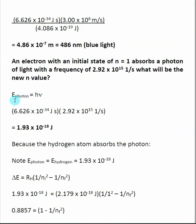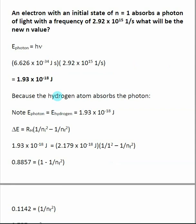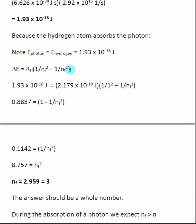First, find the energy of the photon. Since we're given a frequency, we use E = hν, where h is Planck's constant. This gives an energy of 1.93 × 10⁻¹⁸ joules — the amount of energy the hydrogen atom absorbs from the photon. Unlike the emission case, we don't need to change the sign here, because the hydrogen is absorbing energy from the photon. Both values have the same sign, so the energy of the photon equals the energy gained by the hydrogen atom.